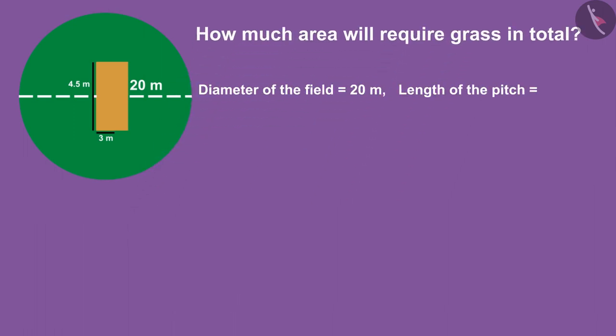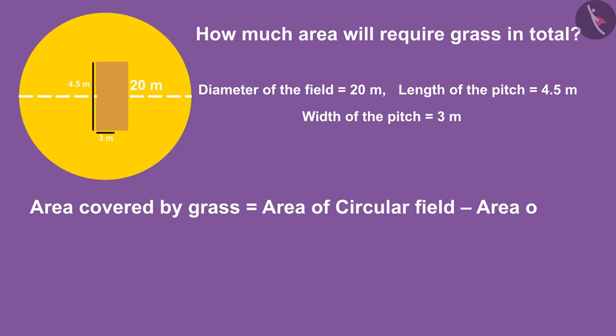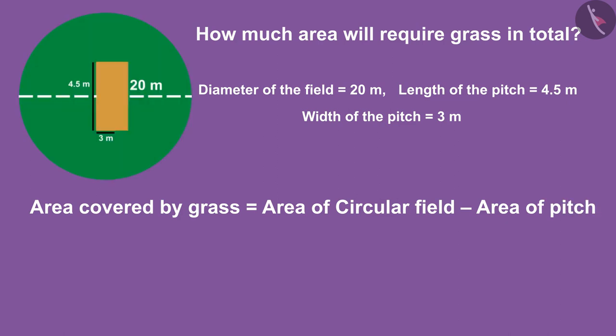Because in this case we are not planting grass on the pitch, we can subtract the area of the pitch from the area of the field. Therefore, to find the area covered by grass, we will subtract the pitch area from the total area of the field.